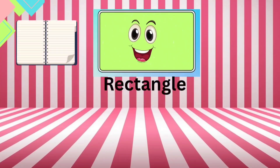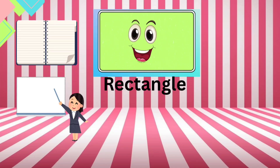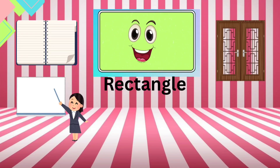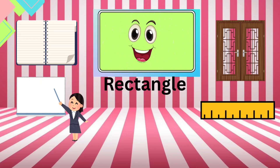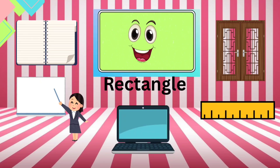For example, you can write on me as a notebook. You can use me as a whiteboard. You can open me as a door. You can use me as a ruler. You can watch me as a laptop. All these objects can be found in the shape of a rectangle.